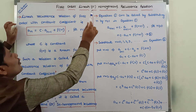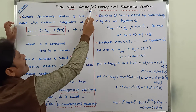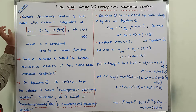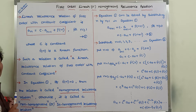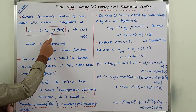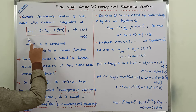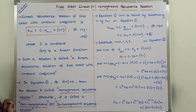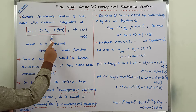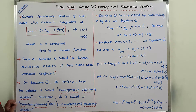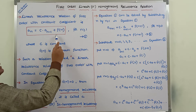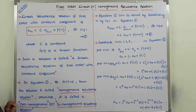Now we have to discuss first-order linear or homogeneous recurrence relations. Linear homogeneous recurrence relations can also be called linear recurrence relations. The first-order linear recurrence relation with constant coefficient can be denoted by equation 1: a_n = c · a_{n-1} + f(n), where c is a constant and f(n) is a known function.